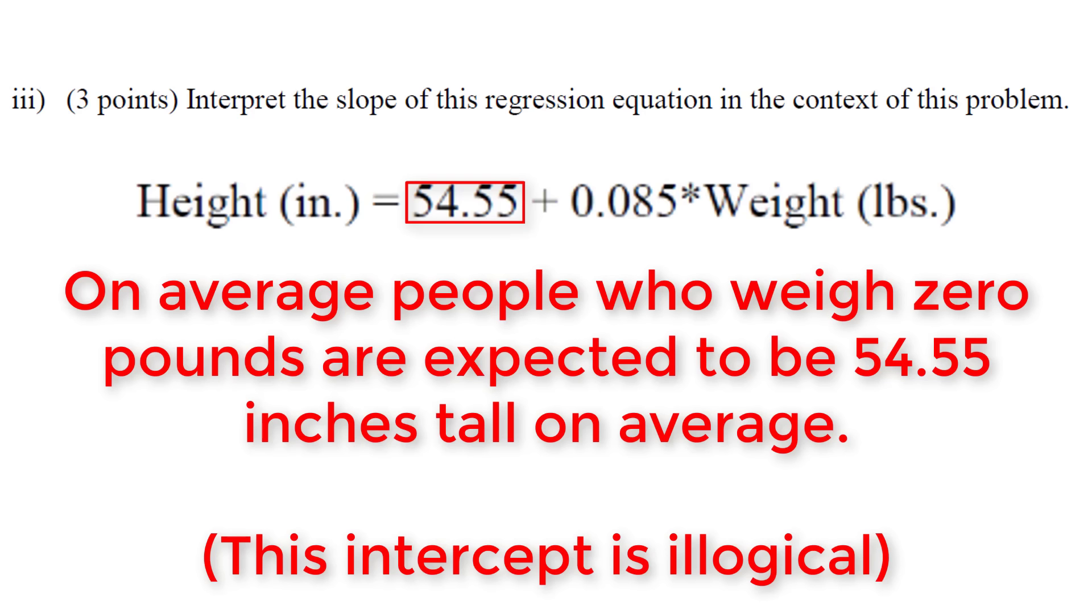This is an extrapolation of our model and actually useless because we don't have people who weigh 0 pounds. The intercept is illogical, probably why we didn't interpret it. Sometimes you'll be asked to interpret the intercept and determine if it's illogical or an extrapolation—going outside the x-bounds.